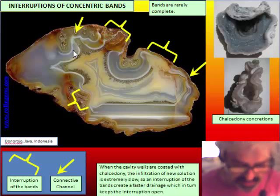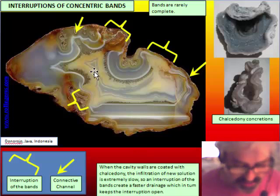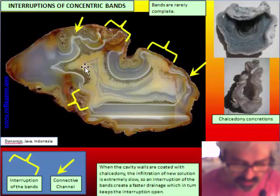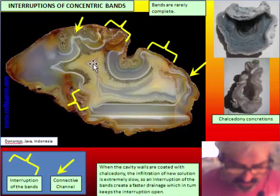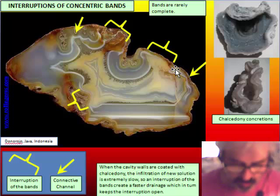These channels are quite important in the theory about the genesis of the agate. We differentiate an interruption of the bands and a connected channel. A connected channel is a channel where there is a connection from inside and outside the nodule — the cavity. An interruption of the band is a wider interruption and there is a better connection.